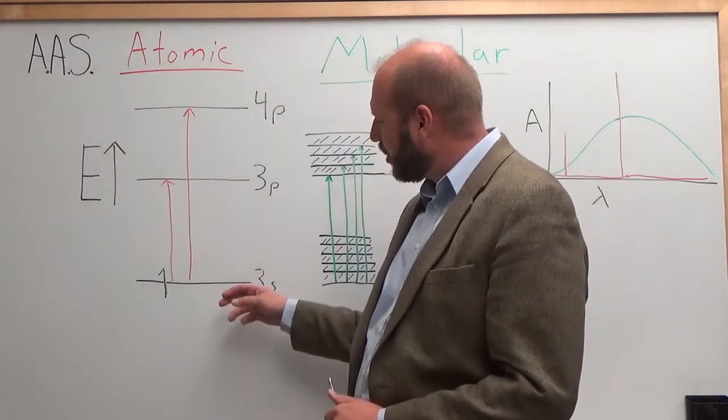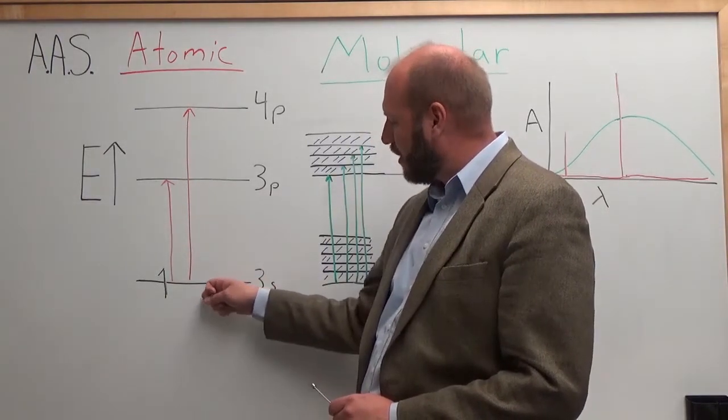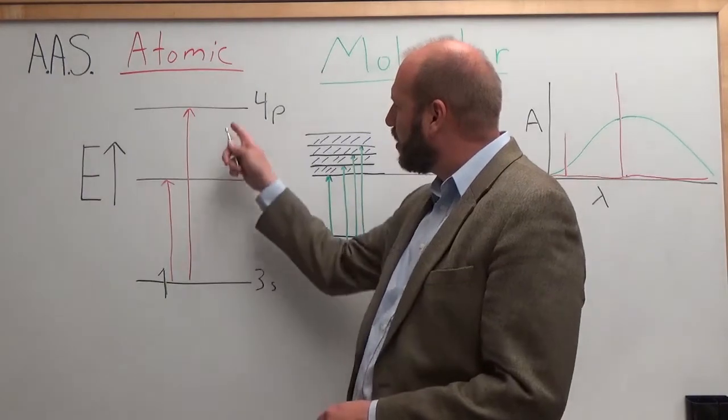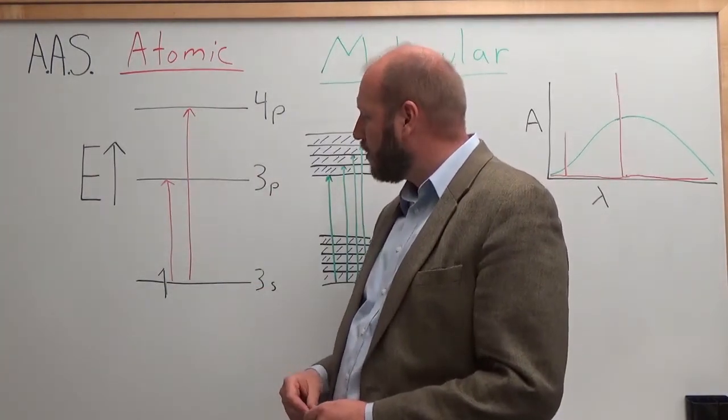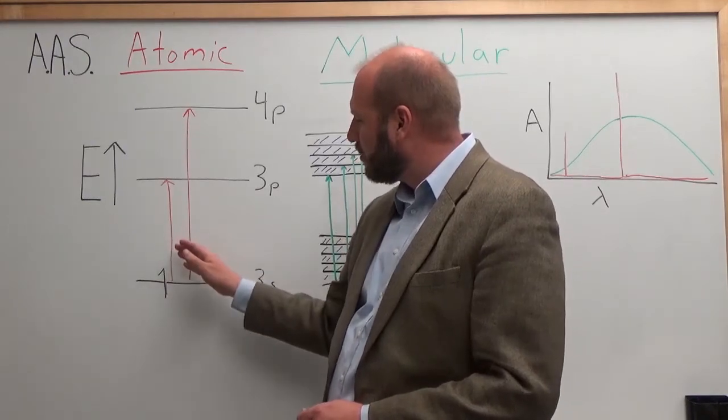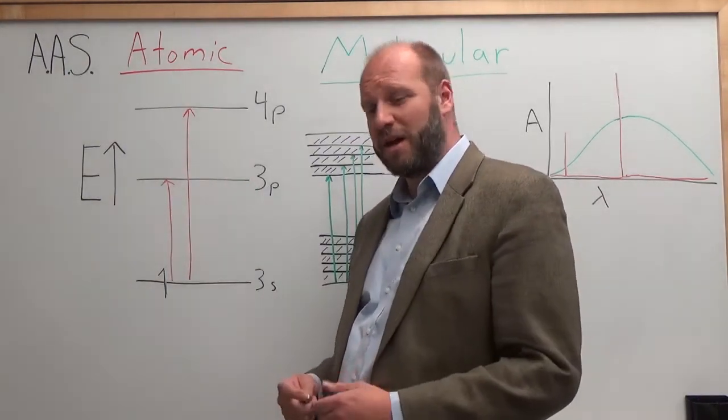What this means is if we look at the energy level diagram for an atom, this is a sodium atom, we have an electron in the 3s orbital. We can excite it to the 3p or the 4p orbital by absorption of light. And that's what we're going to do. We're going to shine a light onto our atoms and it's going to absorb and go to one of these excited states. And we'll measure that absorption.